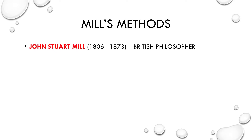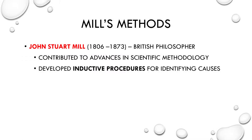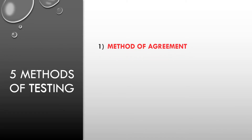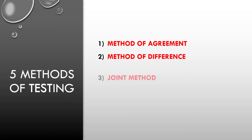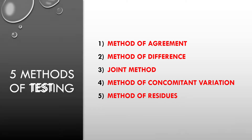19th century British ethicist, logician, and political philosopher John Stuart Mill contributed to advances in scientific methodology by outlining several inductive procedures that would enable researchers to hone in on probable causes of an effect and rule out non-causal factors. These came to be known as Mill's methods, and there are five: the method of agreement, the method of difference, the joint method, the method of concomitant variation, and the method of residues.